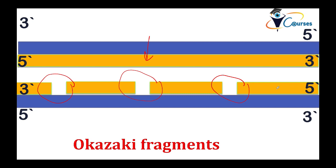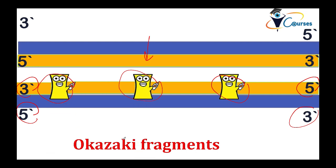The discontinuous fragments on the lagging strand are called Okazaki fragments. These form because the DNA polymerase always builds from 5' to 3', while the template runs from 3' to 5', so every time the helicase unwinds more DNA, new gaps appear between fragments. To glue these Okazaki fragments together, the ligase enzyme comes in and joins them into a single continuous strand. Each original strand then has its complementary copy, and the two new strands coil together to form the new DNA double helix.